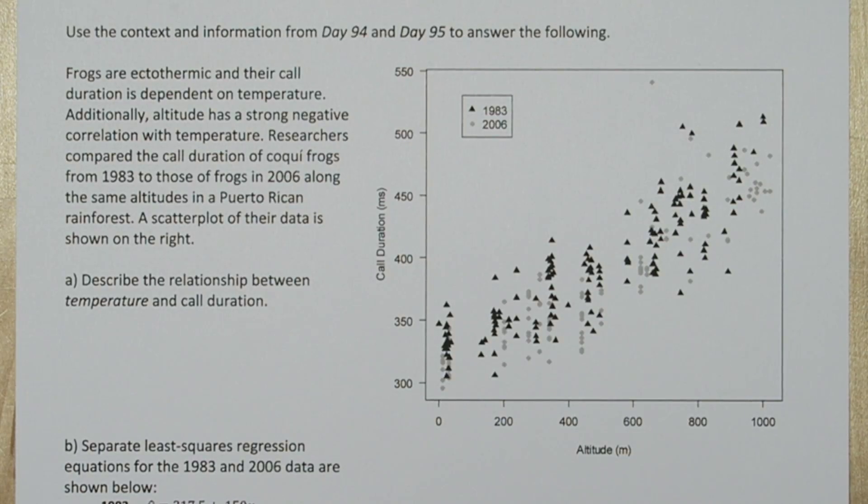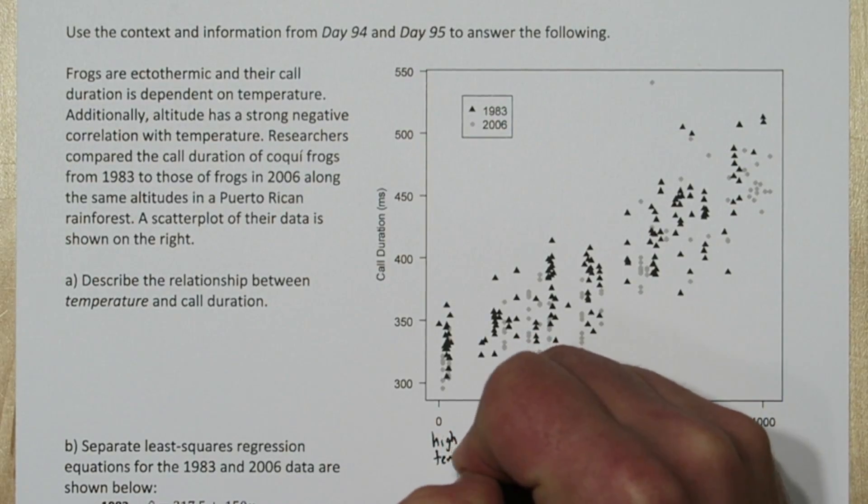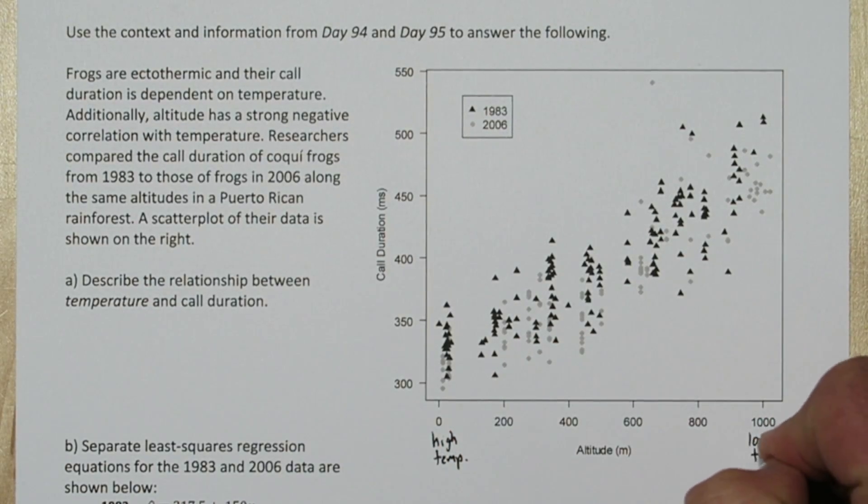In the stem of the problem it says altitude has a strong negative correlation with temperature. That means when you're at low altitudes there's high temperatures, and at high altitudes it's lower temperatures.